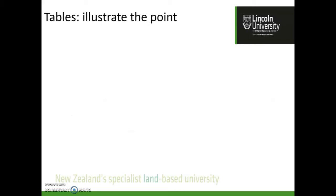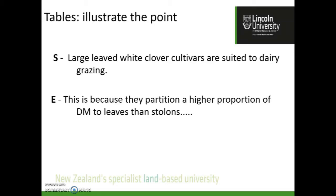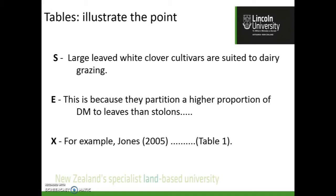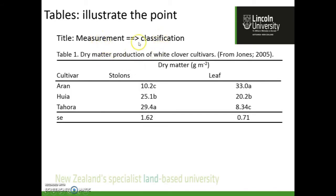For those doing a dissertation or thesis, it's important to think about how to include and use tables. For example, my statement is: 'largely white clover cultivars are suited to dairy grazing.' My explanation is that they partition a higher proportion of dry matter to leaves and stolons, meaning there'll be elevated leaves in the canopy for dairy cows to access. My example is a comparison of white clover cultivars in Table 1. The table title starts with what's been measured — dry matter production — followed by the classification variable: white clover cultivars such as Aaron, Hillier, and Tahora, sourced from Jones 2005.